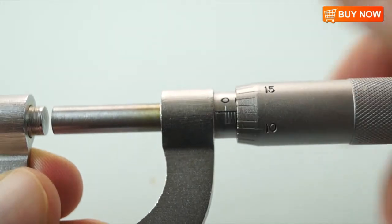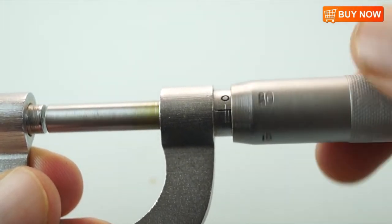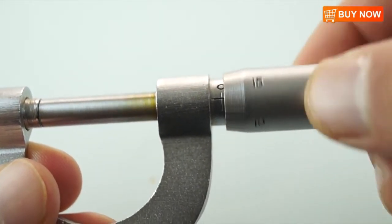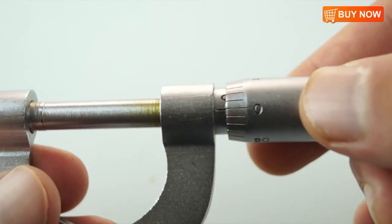To measure an object, first make sure the scale is calibrated to zero, meaning that when the jaw of the scale is completely closed the measurement reads zero.